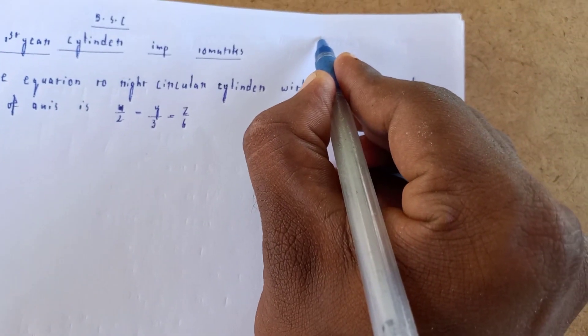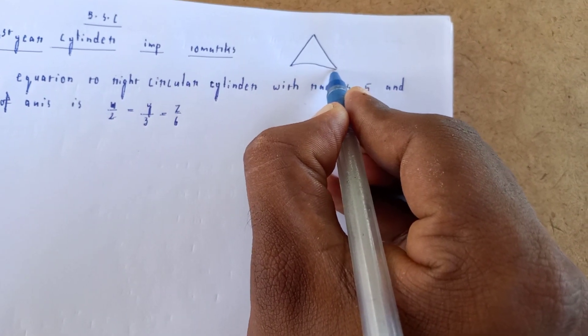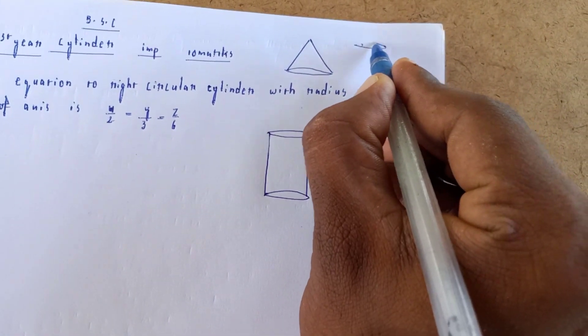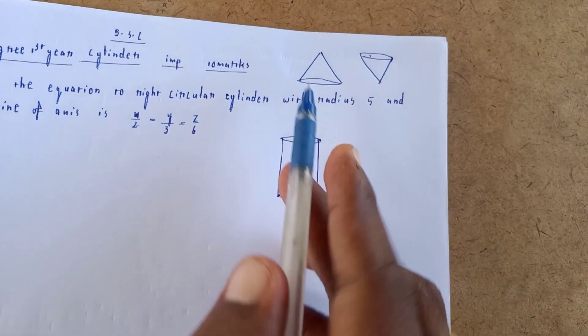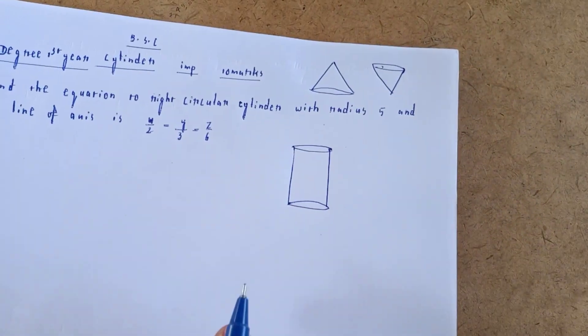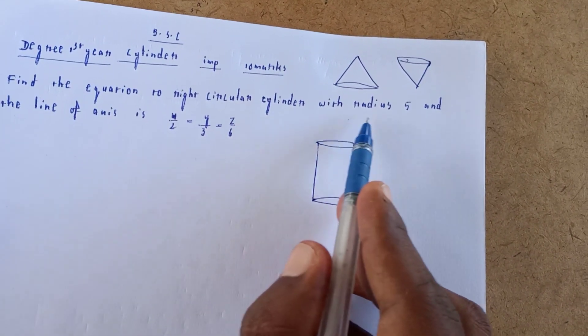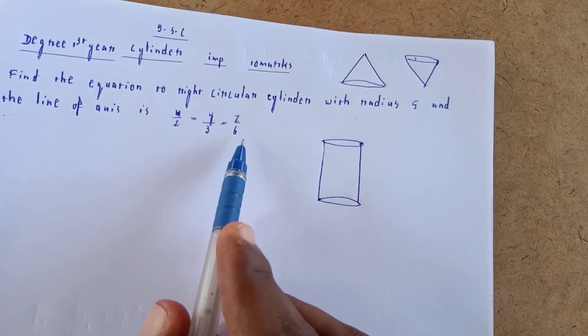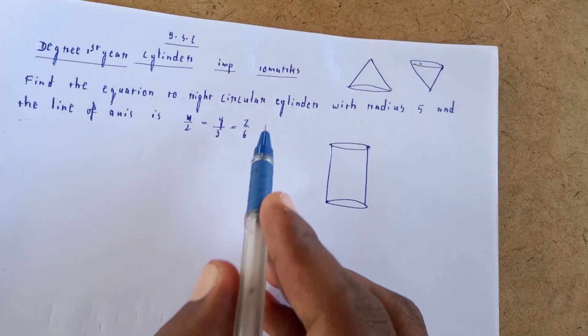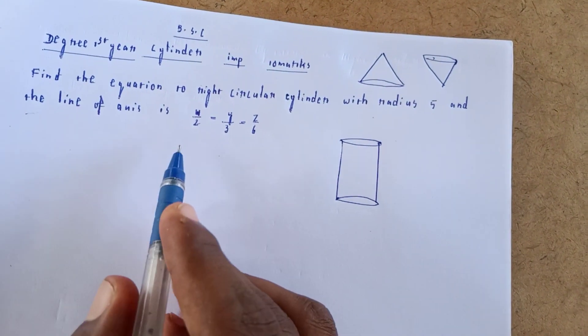Okay, now it is a cylinder. Find the equation of a right circular cylinder with radius 5 where the line of axis is x/2 = y/3 = z/6.